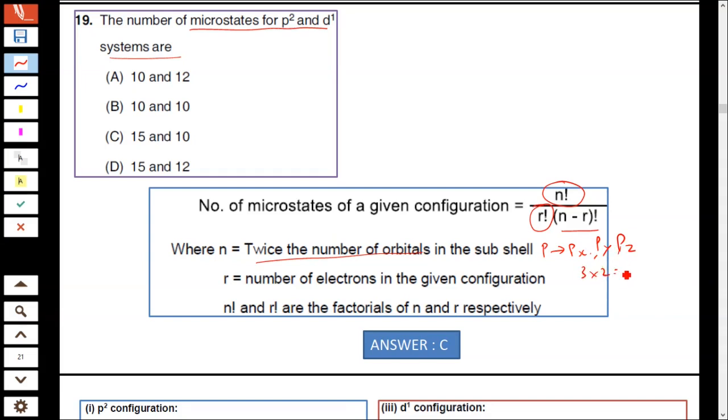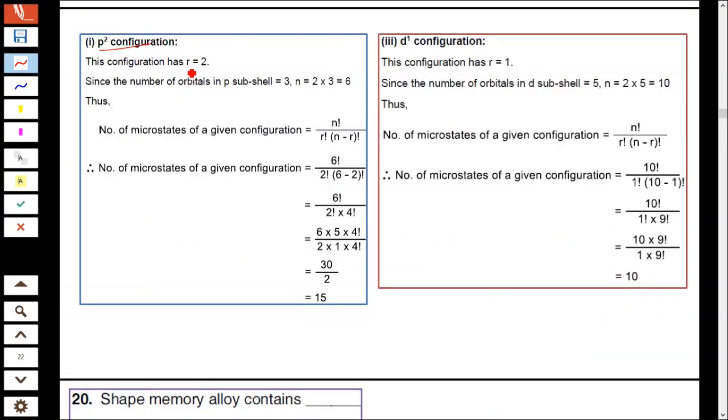For P orbital it contains 3 orbitals (Px, Py, Pz), so 3 × 2 = 6, that is N = 6 for P orbital. For P² configuration, R = 2 (number of electrons). So 6 factorial divided by 2 factorial times 4 factorial, which equals 15.